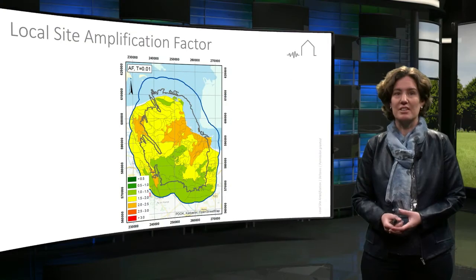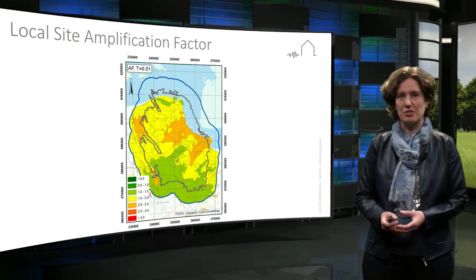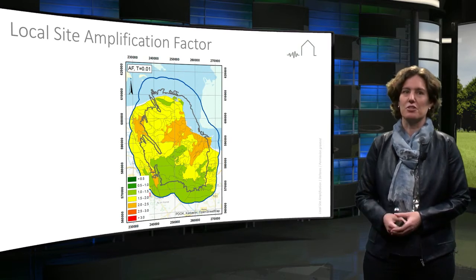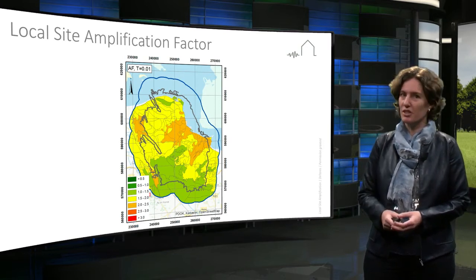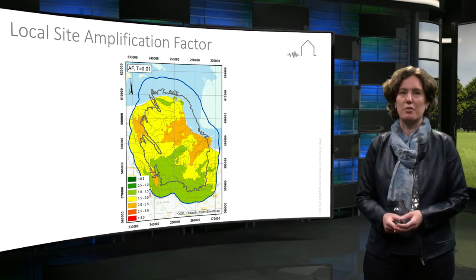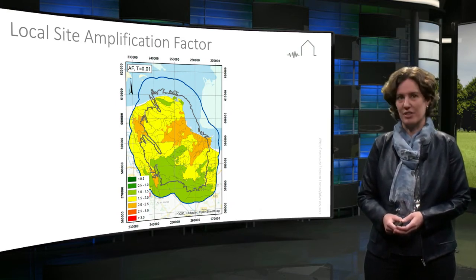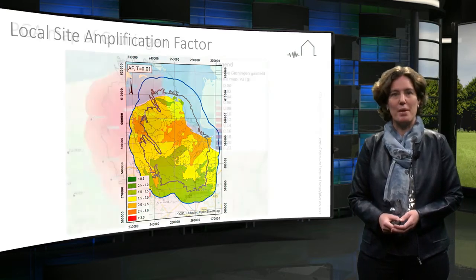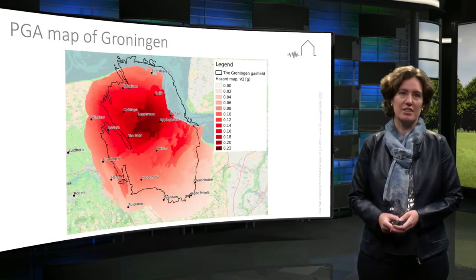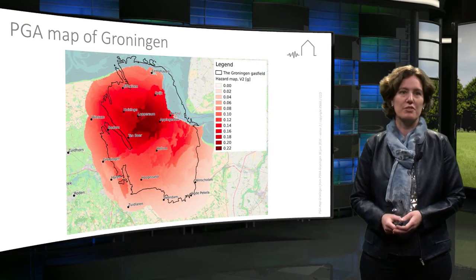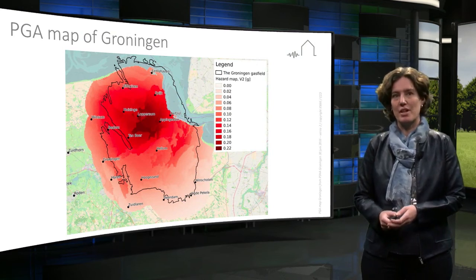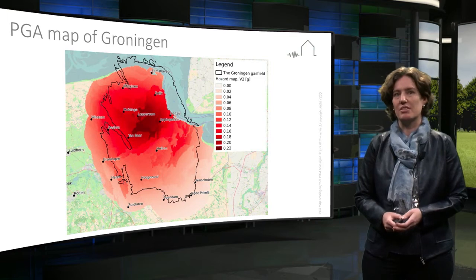For Groningen the amplification over the soft topsoil can differ by a factor of about 2. This image shows the local site amplification across the Groningen region. The orange color shows areas where the amplification is twice as high as in the green area. In current maps predicting the peak ground acceleration, which you have already seen in previous presentations, this effect is taken into account. That is why you see these irregular shapes.